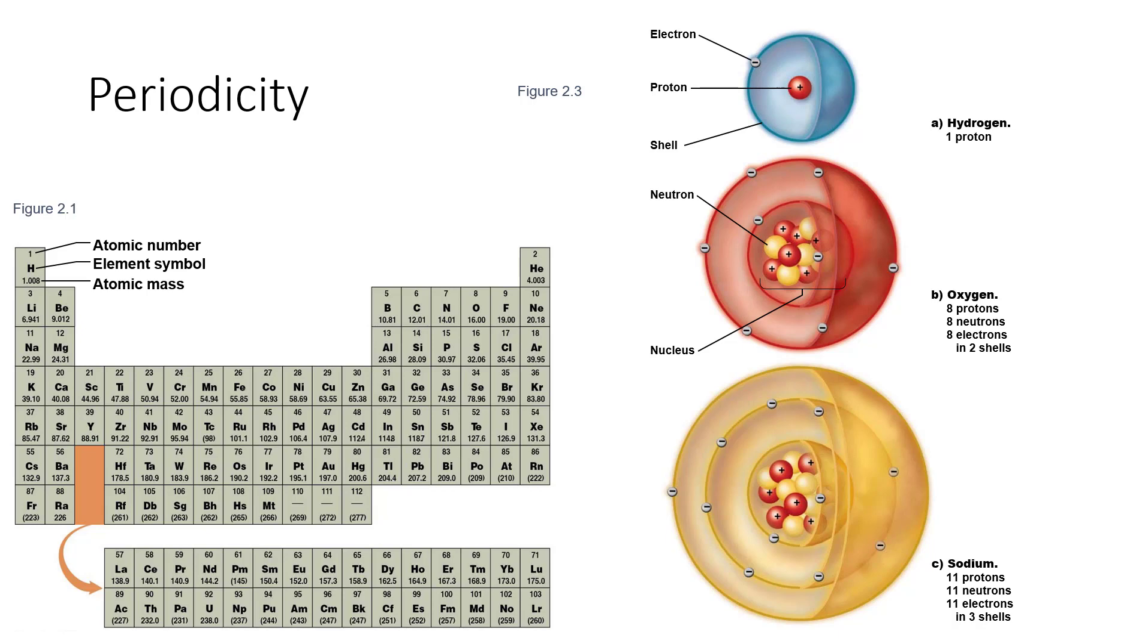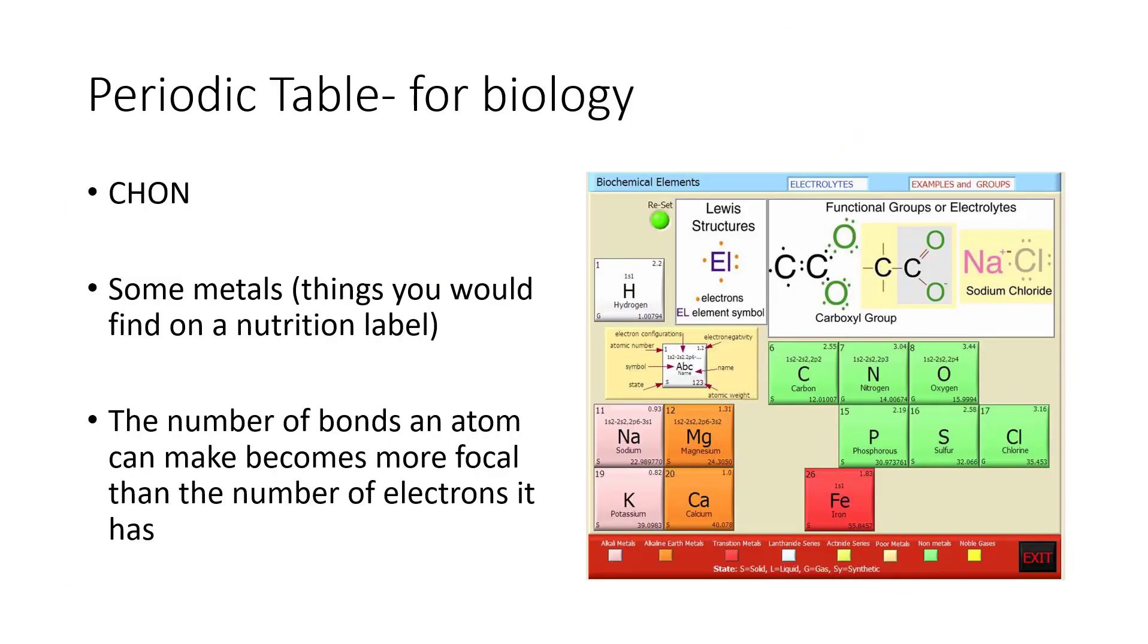So on average, an oxygen atom will have an atomic mass of 16, which means eight protons and eight neutrons. Now we don't have to memorize this large periodic table because in biology we only look at certain elements. Primarily carbon (C), hydrogen (H), oxygen (O), and nitrogen (N). There are some things we need to think of like iron, which is Fe. This is something you'll find on a nutrition label because we need iron. We also need calcium, magnesium, sodium, and potassium. We're going to spend some time on sodium and potassium later on when we cover neurons.